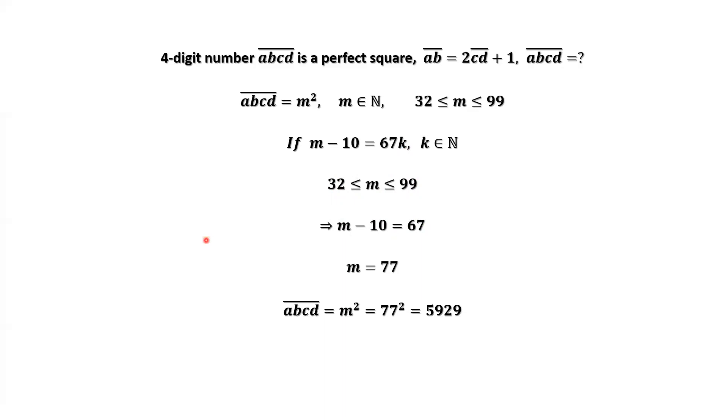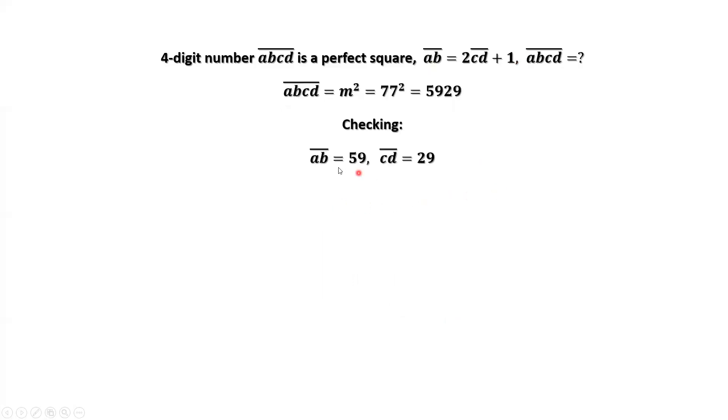ABCD equals M squared equals 77 squared, which is 5929. We need to check this result if it satisfies this given condition. AB equals 59, CD equals 29. 2 CD plus 1 equals 2 times 29 plus 1, which is 59. 59 equals 59. It is true.